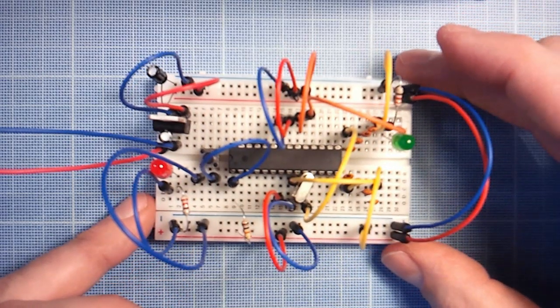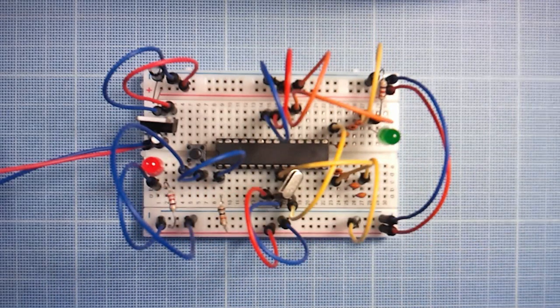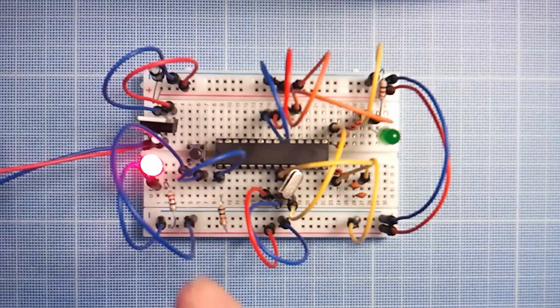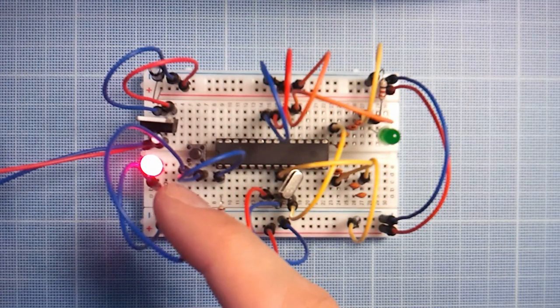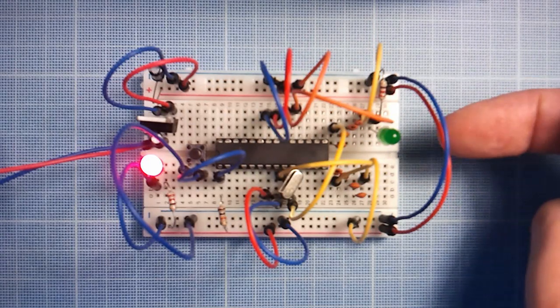Now let's power it up. The red LED indicates that we've got the power. I programmed this Arduino to blink the green LED every second. If everything's connected properly, this should happen in a moment. As you can see it works.